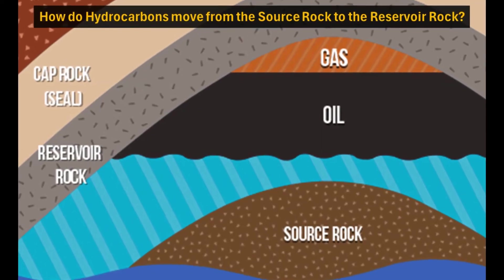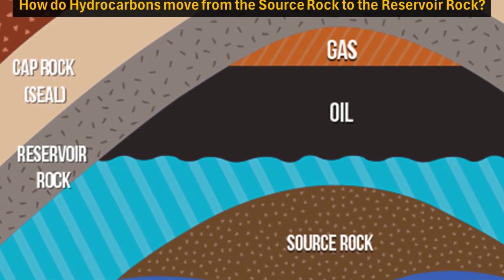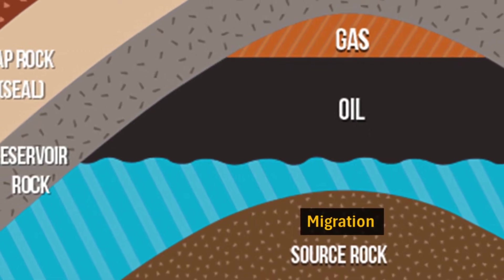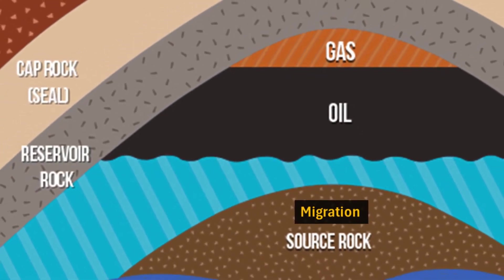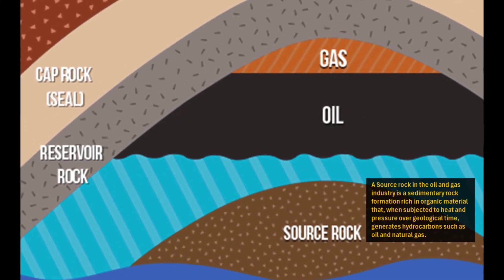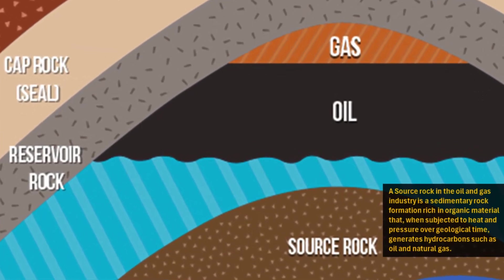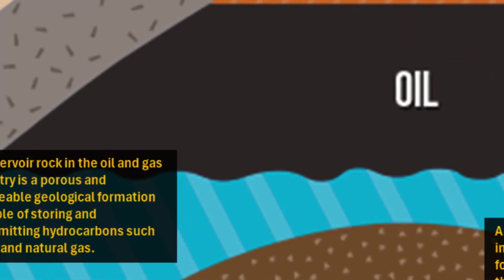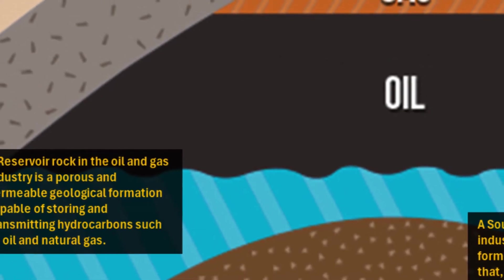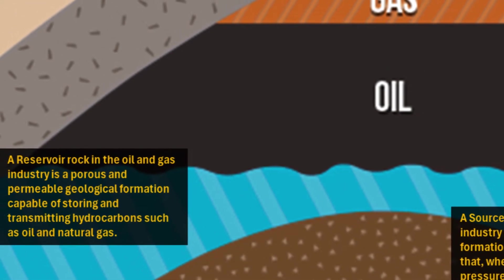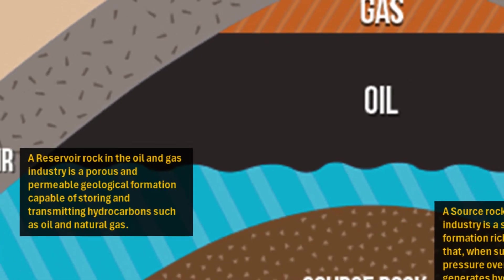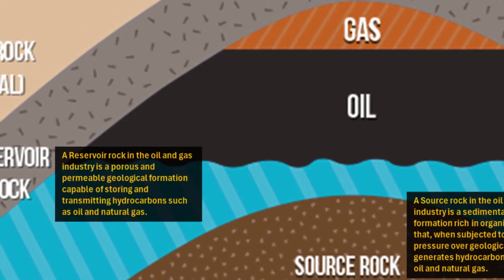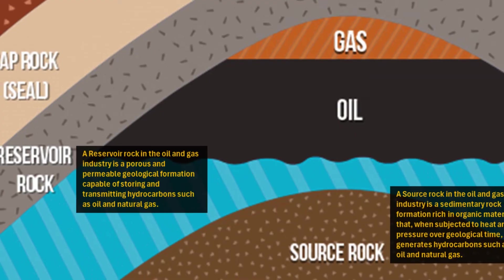But how do these hydrocarbons move from the source rock where they were formed to the reservoir rock where we can find them? This process is called migration, and it happens because hydrocarbons are lighter than water — oil and gas naturally want to rise upwards towards the surface through any porous and permeable rock formations they encounter. Porous means the rock has spaces or pores between its grains; permeable means those pores are connected and allow fluid to flow through them. The more porous and permeable a rock is, the more potential it has to hold hydrocarbons.